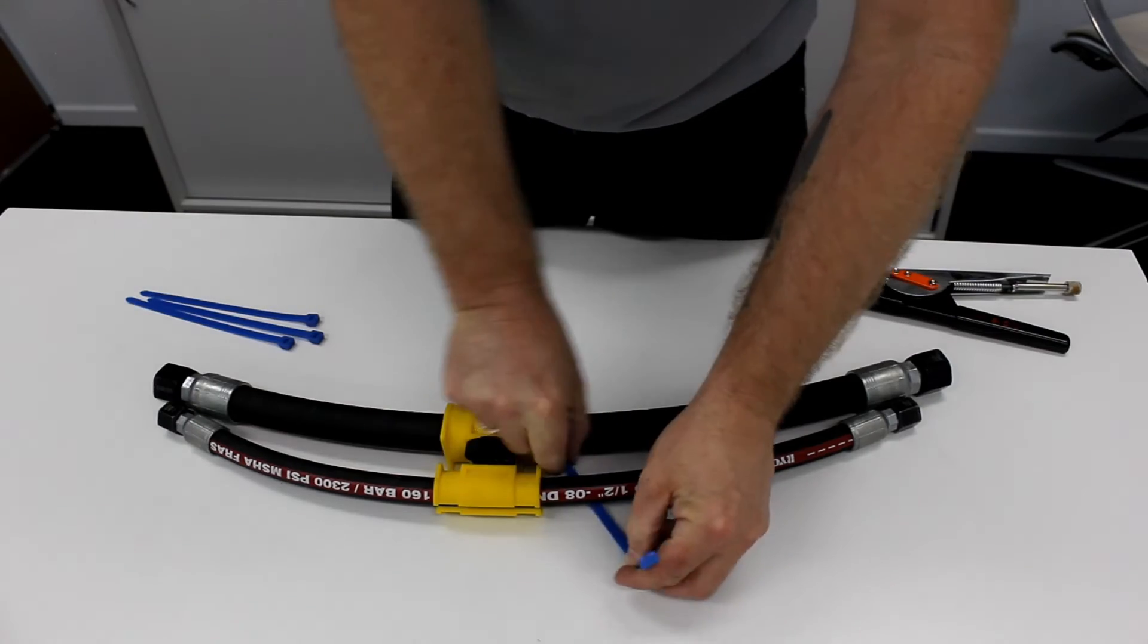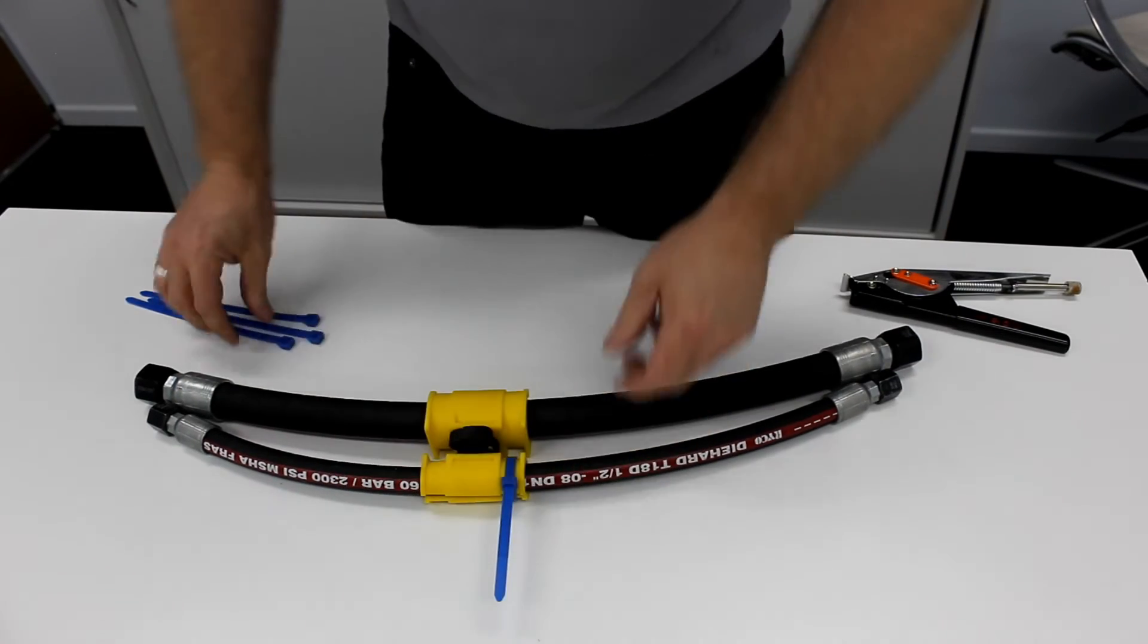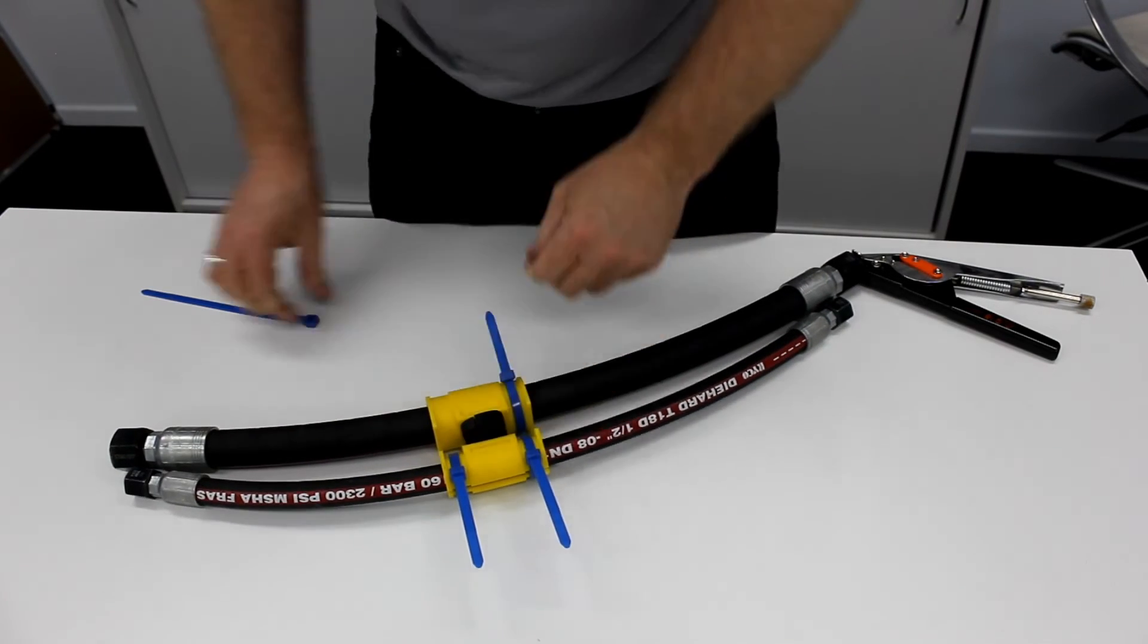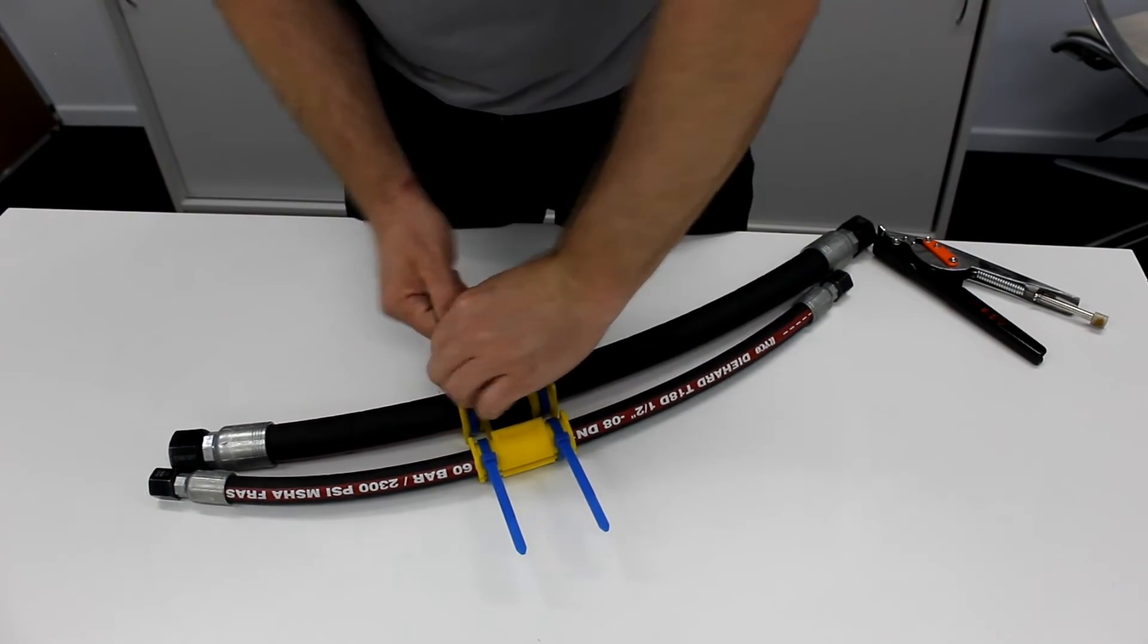Use two blue tension straps per clamp to securely position the HoseMate assembly onto the hose. The tension straps should be firm but not over tightened.